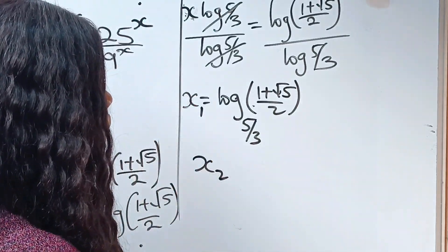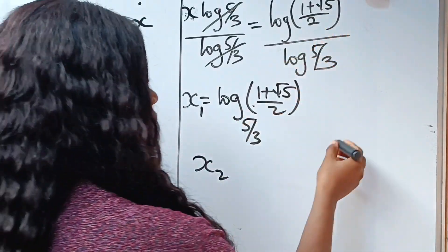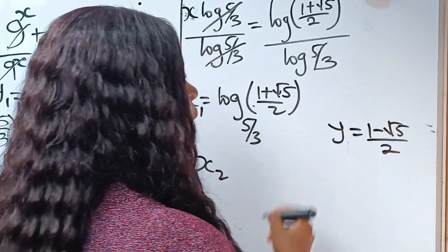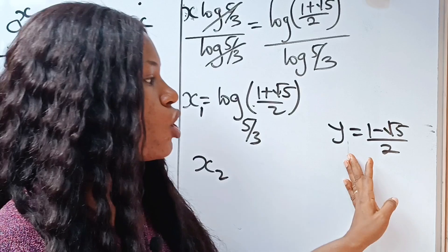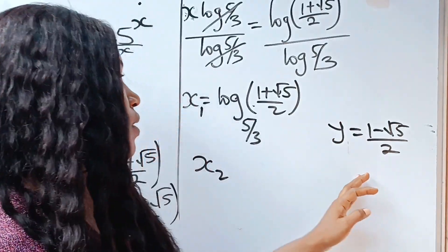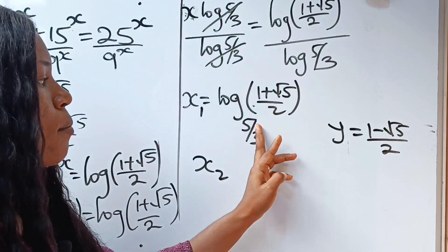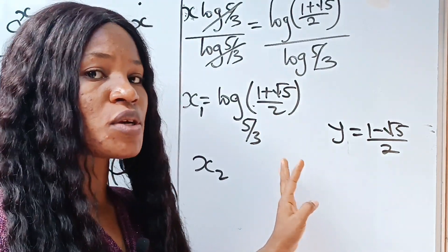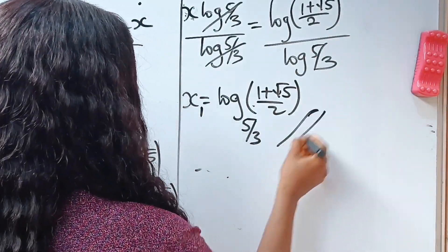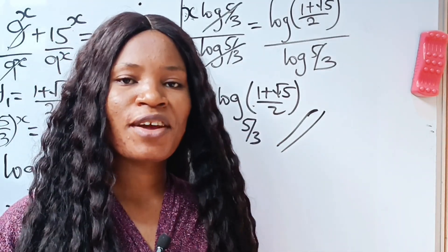For the second value, recall that y2 is equal to 1 minus root 5 divided by 2. But note that when we solve this, we are going to get a negative value. So if x2 equals log of 1 minus root 5 over 2, base 5 over 3, there is no such thing because we cannot find the logarithm of a negative number. So that brings us to the conclusion that the first value is the only value of our x. Thank you so much for watching and have a lovely day.